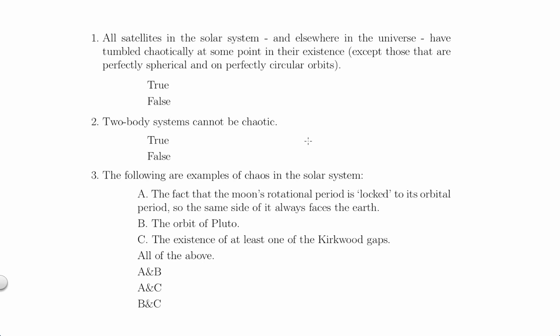So the answer to this problem is true. The differential equations for two bodies acting under gmm over r-squared forces only have three kinds of solutions: ellipses, parabolas, and hyperbolas. And that means that two-body systems cannot be chaotic.